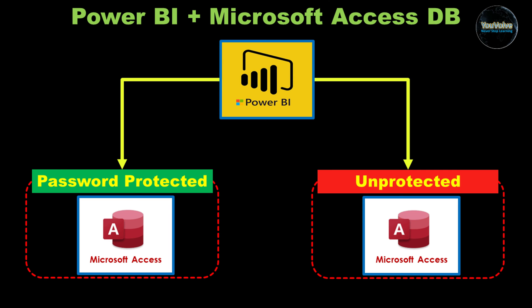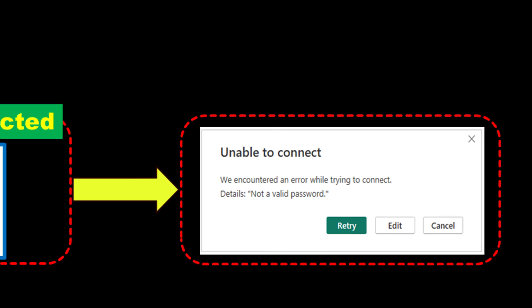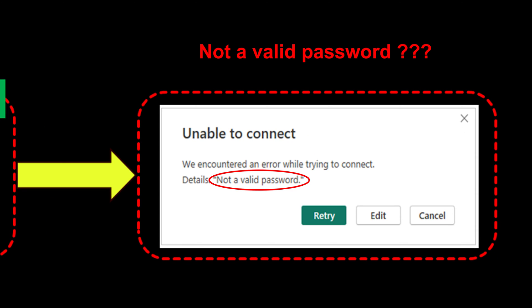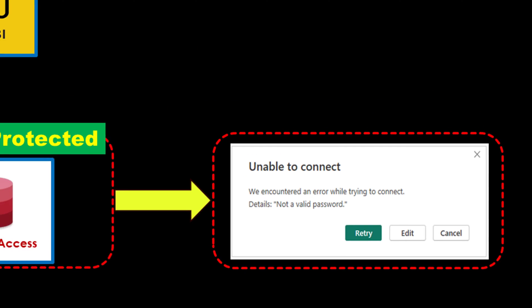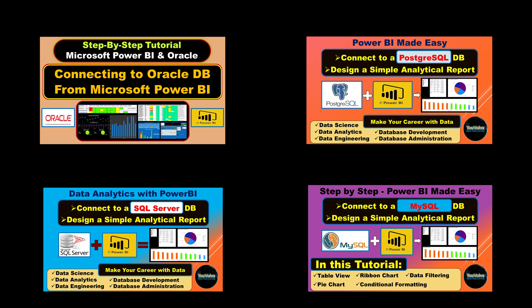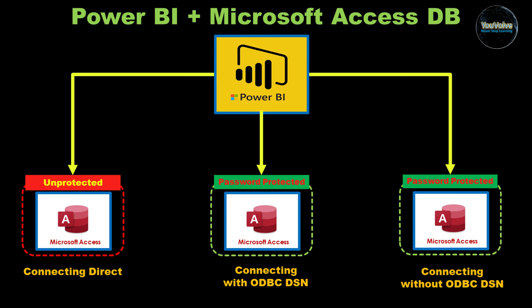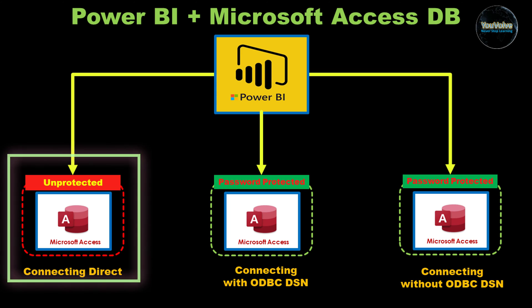While connecting to an unprotected Access database is quite simple, I have seen quite a few issues encountered by Power BI users when connecting to a password protected Microsoft Access database, because there is no straightforward method to do so. I made this video to help resolve these connection issues. I will cover mainly three topics in this tutorial. First, I will show you how to connect Power BI to an unprotected Access database. Although it's very simple, I am including this step so I can better explain the differences, the issues and the solutions in the next steps.